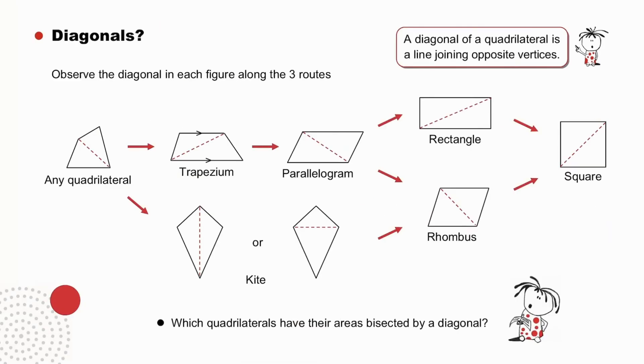Diagonals? A diagonal of a quadrilateral is a line joining opposite vertices. Pause to observe the diagonal in each figure along the three routes, and then answer the question below. Which quadrilaterals have their areas bisected by a diagonal? Not this one. Not the trapezium. But in the parallelogram, the diagonal does bisect the area. Again, true for all the quadrilaterals that follow. The long diagonal of a kite bisects the area, but the short one does not.